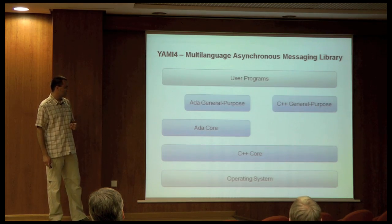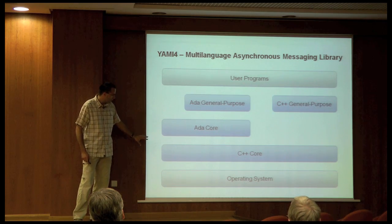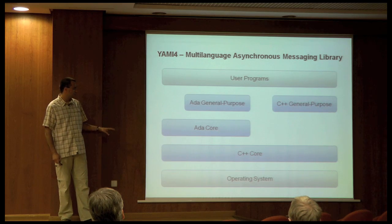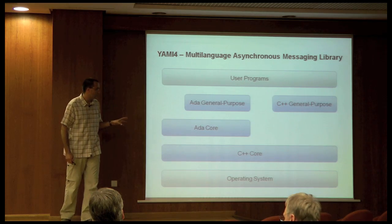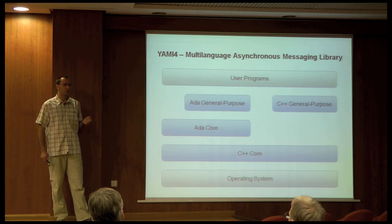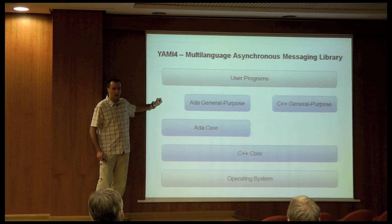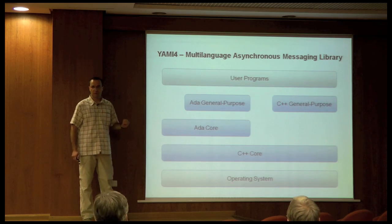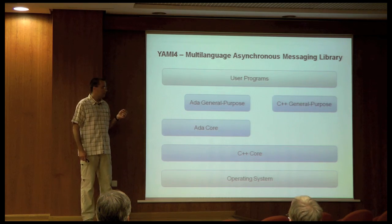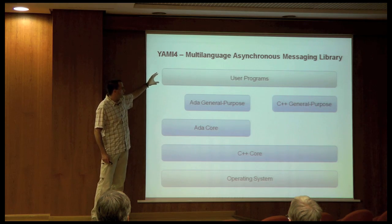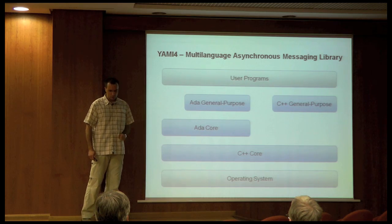Its internal structure is roughly this — there are more components which are of no interest to us. At the very bottom layer there is a C++ core component which manages low-level communication concepts like socket operation, connection management, and also queues. Above this, there are high-level components for general-purpose programming which implement higher-level messaging constructs like publish/subscribe messaging. And user programs usually are built on top of that, calling general-purpose components, and occasionally referring to the core components.